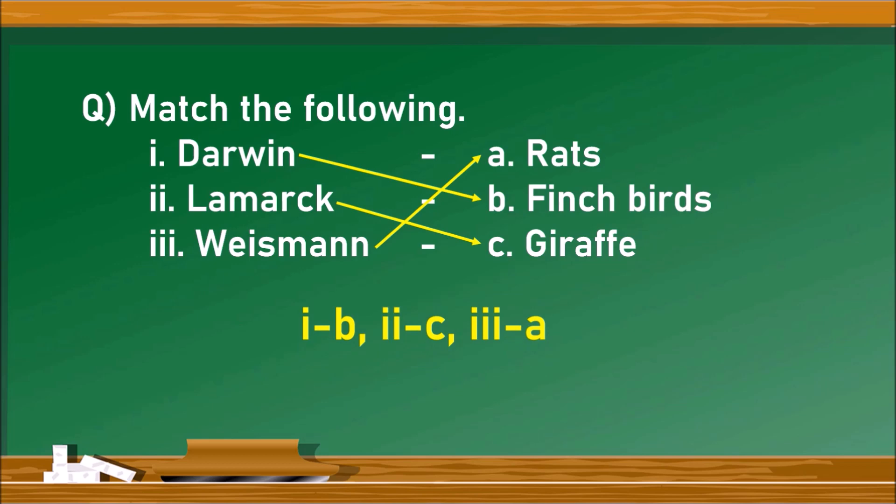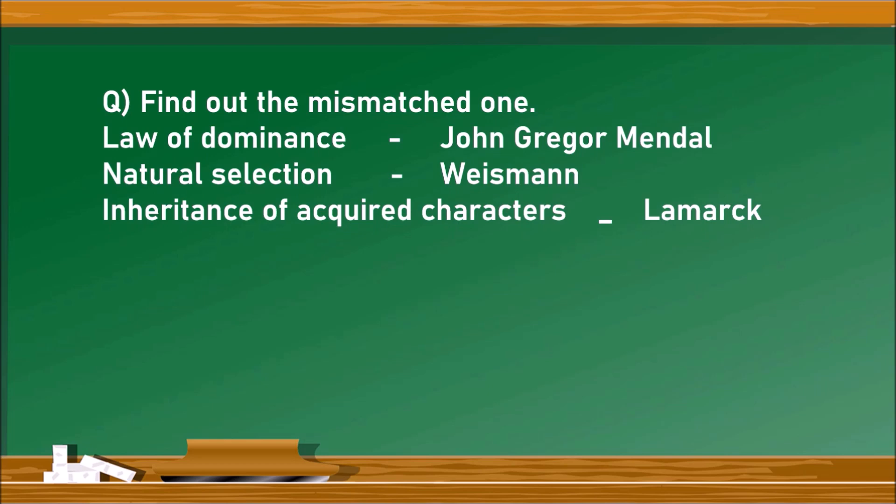Next question: Find the mismatched one. Three matches are given: Law of dominance - Gregor Mendel, Natural selection - Weismann, Inheritance of acquired characters - Lamarck. Law of dominance was proposed by Gregor Mendel, and inheritance of acquired characters by Lamarck. However, natural selection by Weismann is mismatched. Natural selection was proposed by Charles Darwin.